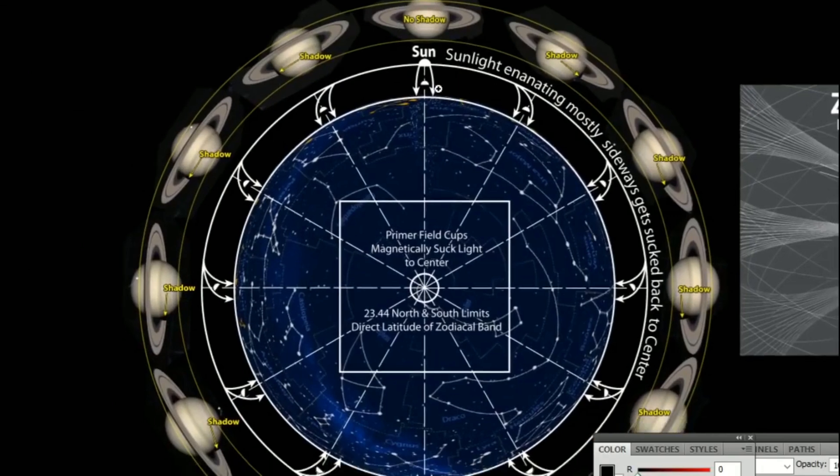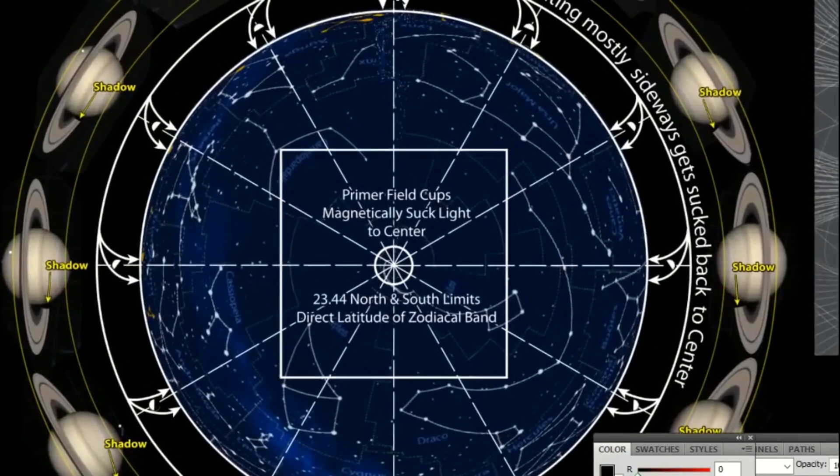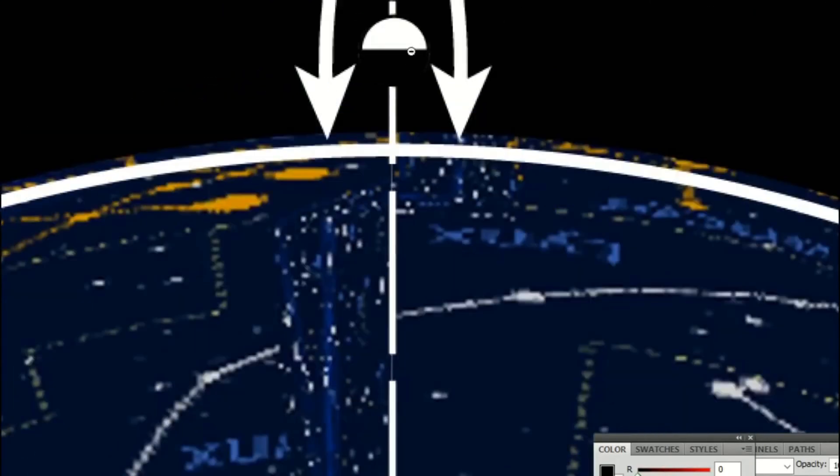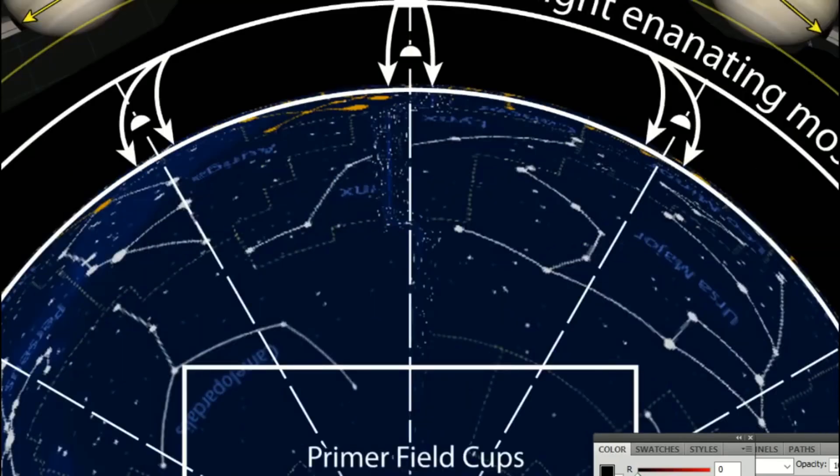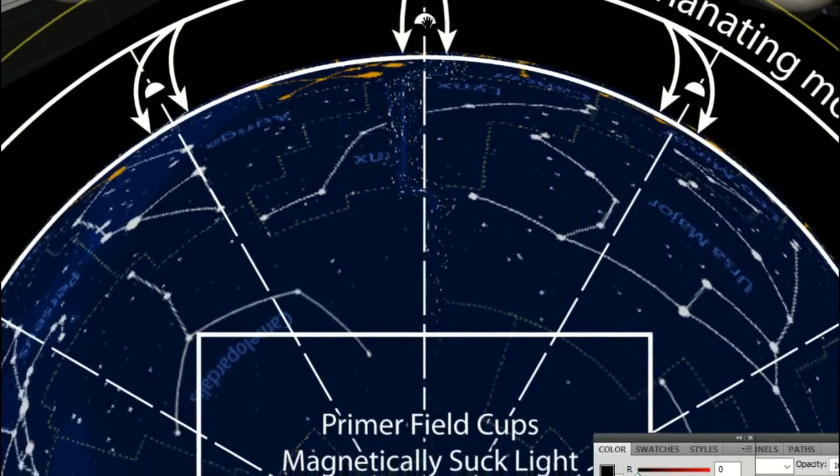If we go back to this illustration, you see how the Sun is at the top right there. I spelled that emanating, mostly sideways gets sucked back to the center. This planet right here I have as Saturn. When Saturn is right behind the Sun, there's no shadow, so it's getting fully illuminated, although it's an ambient illumination, meaning that it's not as bright. That's why Venus is like that as well. When it's directly behind the Sun, we're not getting a very severe illumination like we do when we see a Venus crescent.